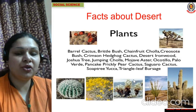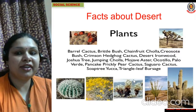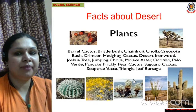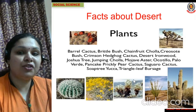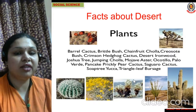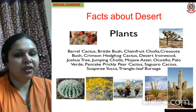The plants which grow in the desert region are: barrel cactus, brittle bush, chain fruit cholla, craze resort, brabush, crimson hedgehog cactus, desert ironwood, jostle tree, jumping cholla, Mojave aster, ocotillo, palo verde, pancake prickly pear cactus, saguaro cactus, soap tree yucca, and triangle leaf bursage. These are some types of plants found in the desert region.